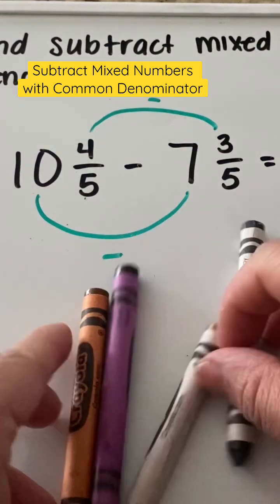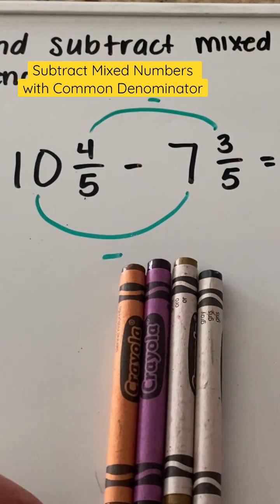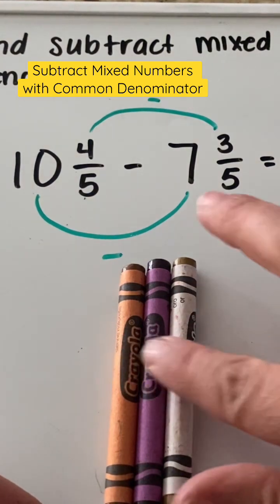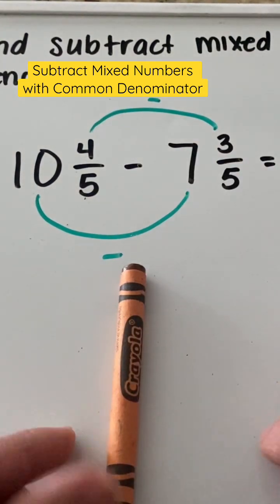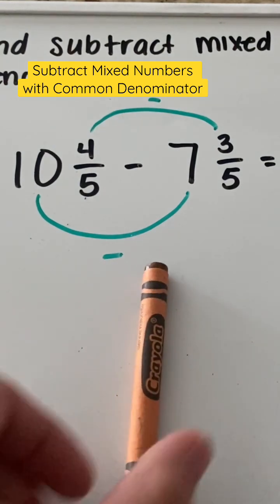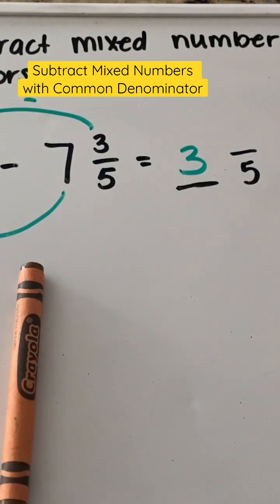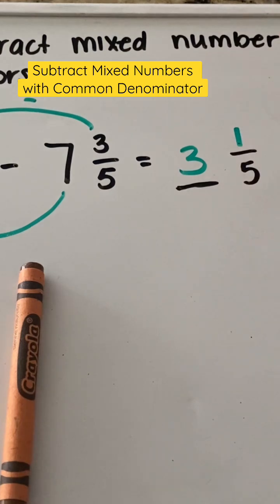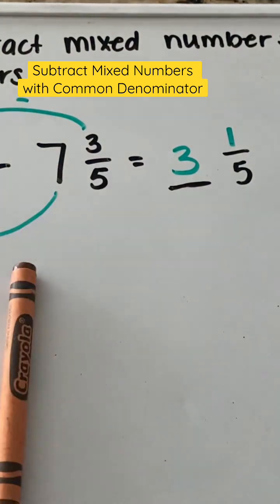So I have my four crayons right here and I need to take away three. One, two, three. I have one crayon remaining. Four minus three is what? Our answer now is three and one fifths.